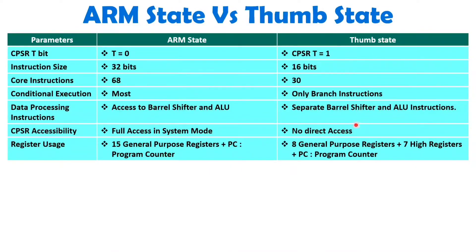In Thumb state, there are also 16 registers in total, but only 8 are general-purpose registers; 7 are high registers, plus the program counter. Thumb state is used for low-end applications where you don't need many general-purpose registers. For complex programming, ARM state is used, where you need full system access and more general-purpose registers.